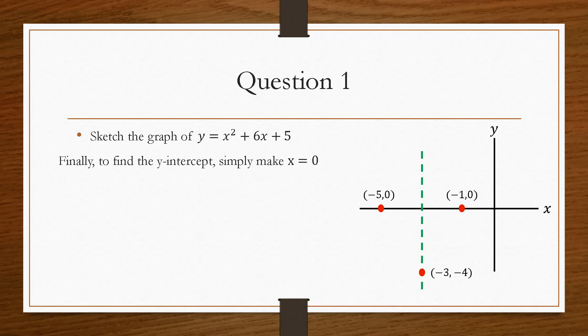And then lastly, we need to find out where this curve cuts the y-axis. So if we cut the y-axis, the inverse of the roots, we make x equal 0, because here, if we cut the y-axis, x is neither positive or negative. x must be 0. So if we substitute in x as 0, then we get a y value of 5. So our y-intercept becomes 0 and 5.